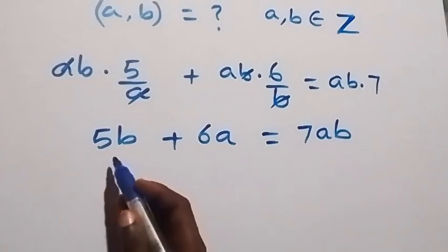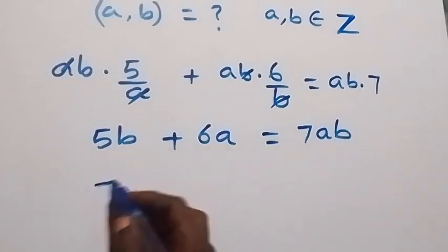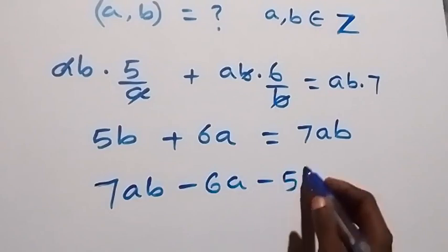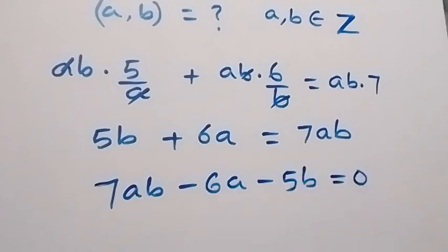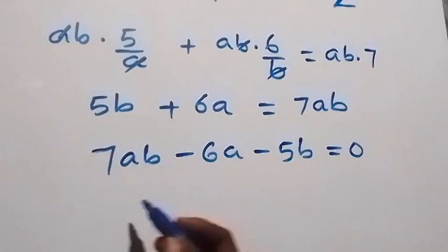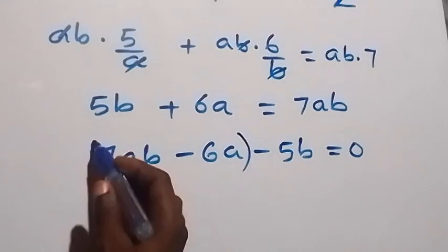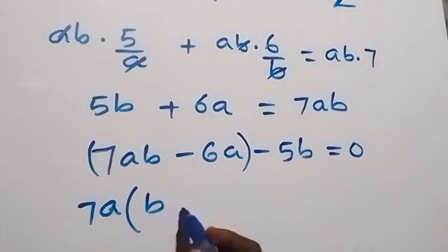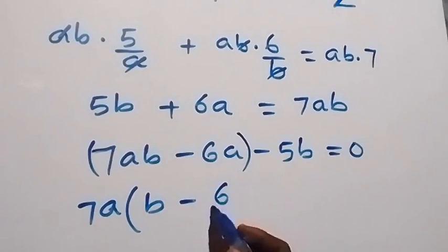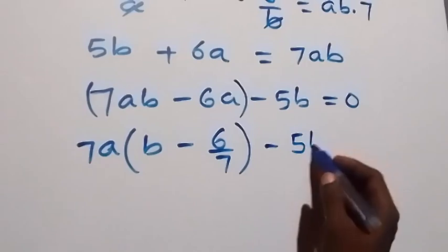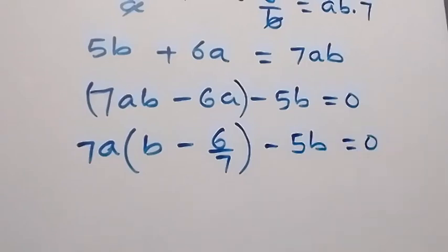From here, let's take everything to one side. 6a and 5b come over and become minus, so we have 7ab minus 6a minus 5b equals zero. Next step: let's factor 7a out. From the first two terms, taking 7a out leaves b minus 6 over 7.